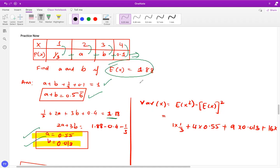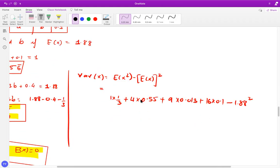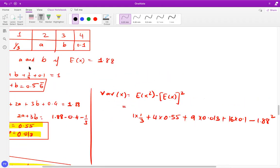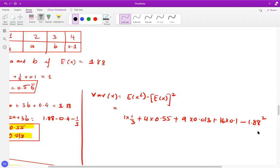Now to find out the variance, of course, you know the formula. That's basically E of X square minus E of X, the whole square. So E of X square is going to be squared X values, one square times one, two square times A, three square times B, four square times 0.1 and minus X bar square. So this is how you calculate the variance.